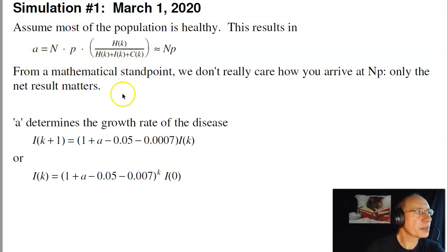Also, A determines the growth rate of the disease. The next value is going to be 1 plus A minus 5% cured minus 0.0007 die. If this number is bigger than 1, the disease increases. If it's less than 1, it gets smaller and smaller.